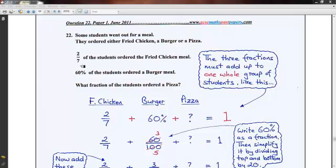And we're given some fractions here. We're told that of all these students, two-sevenths ordered the fried chicken meal, 60% of the students ordered a burger meal. We're asked to work out what fraction of the students ordered a pizza.